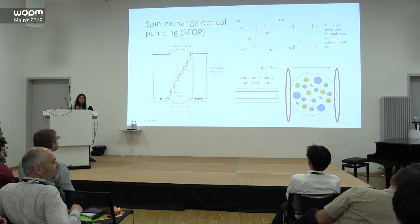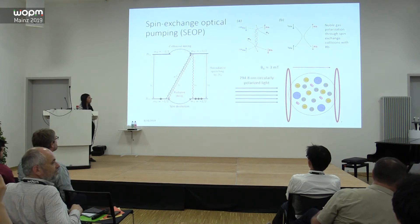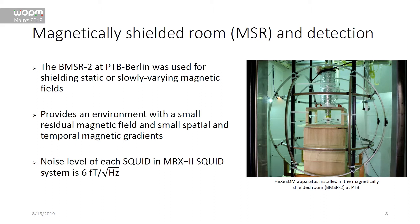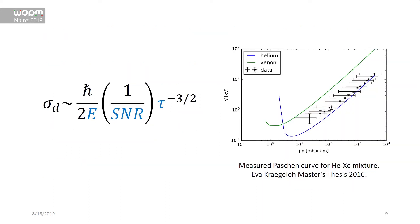Briefly, we polarize rubidium and through spin-exchange collisions polarize the xenon and helium simultaneously. We use the magnetically shielded room at PTB Berlin — the BMSR2 — which has a very stable magnetic field and very small gradients both spatially and in time. We use SQUIDs with a noise level of about 6 femtotesla per √Hz, positioned about five centimeters from the middle of the measurement cell.